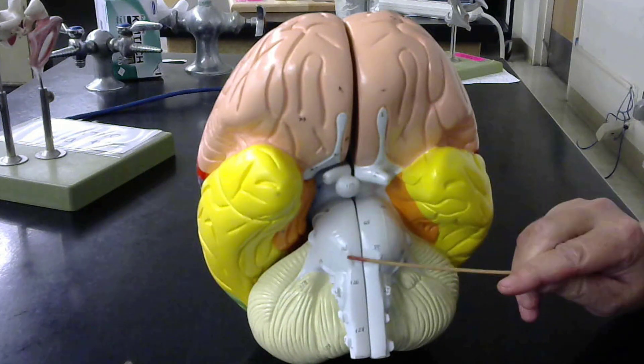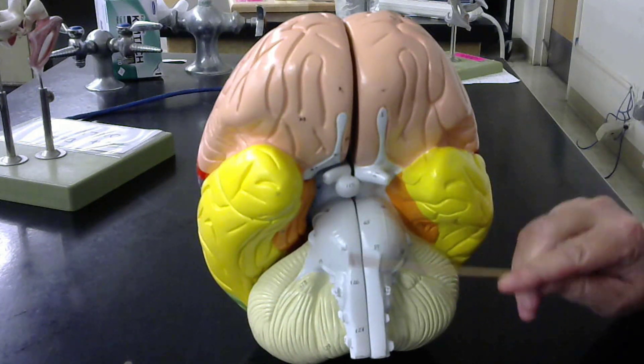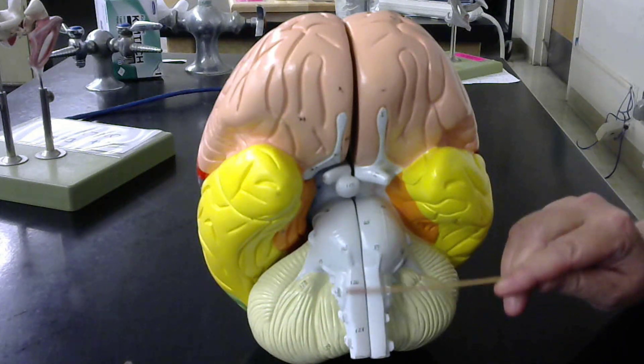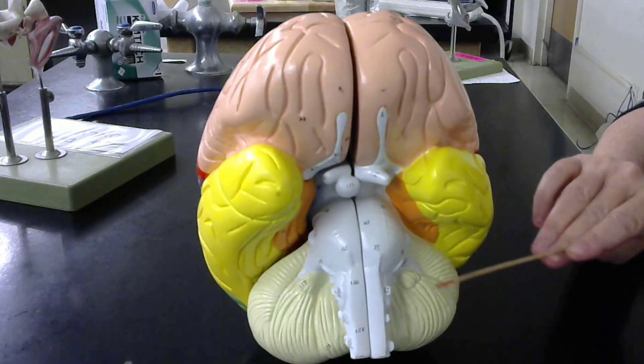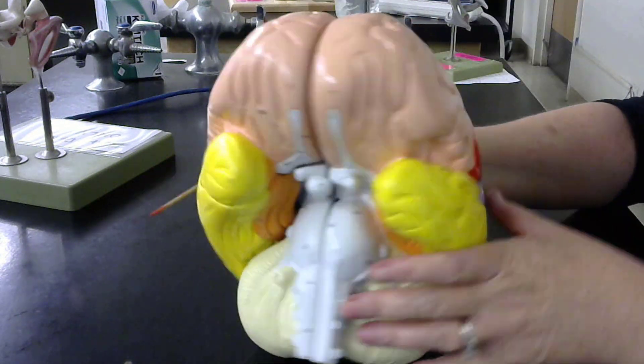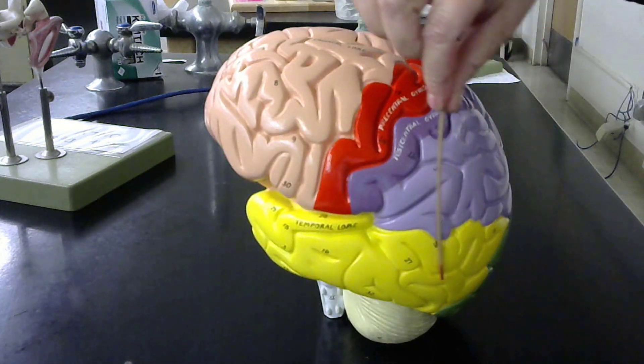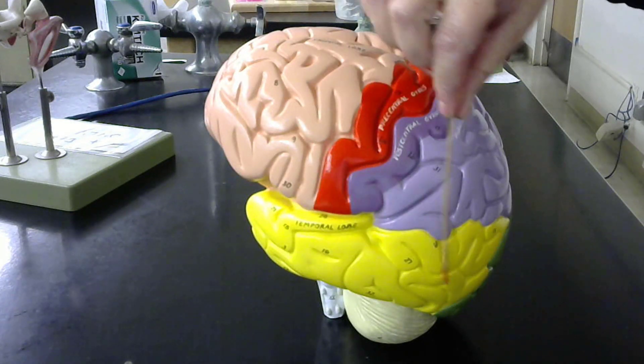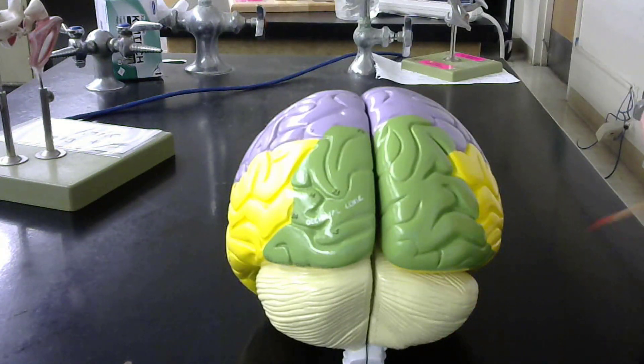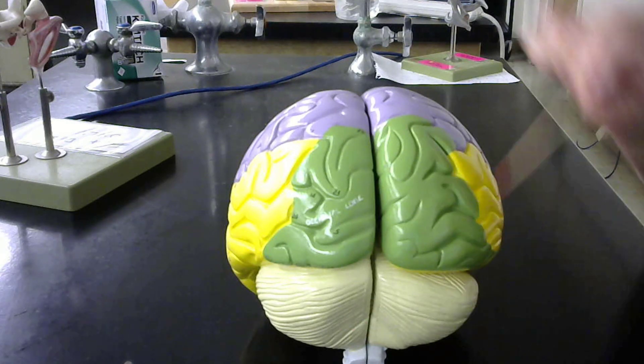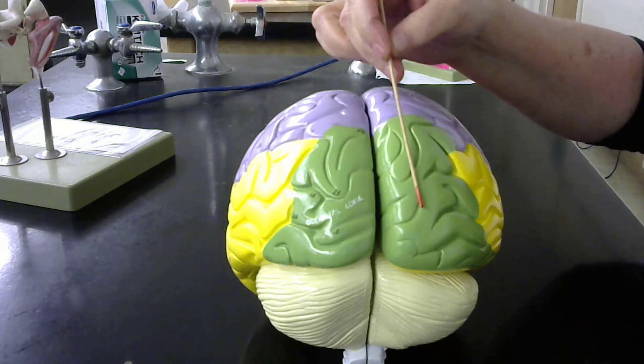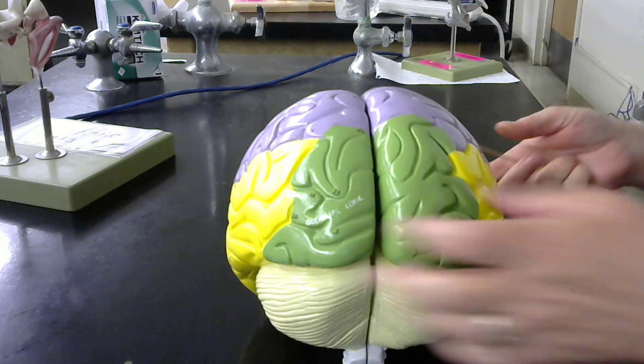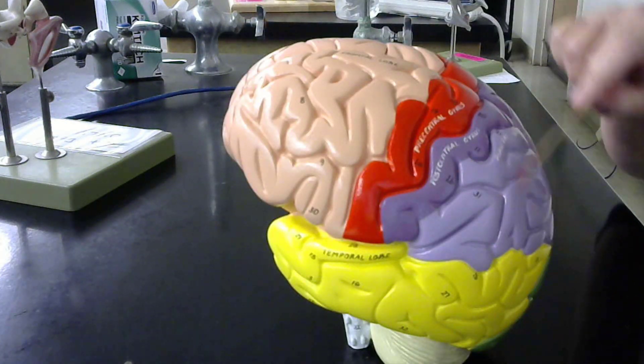This bump here is the pons, which is part of the brain stem. Then here is the medulla oblongata. Down here is the cerebellum. Here in yellow we have the temporal lobe, here in the back. This is the cerebellum, and in green is the occipital lobe.